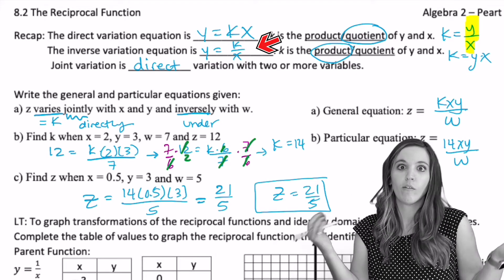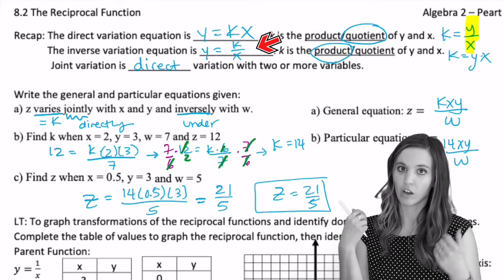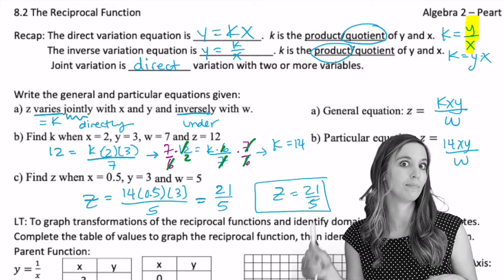For inverse variation, of course, we have y equals k divided by x. So the constant of variation k can be found by multiplying y times x.